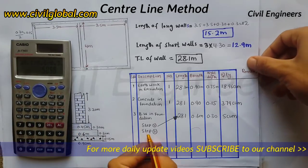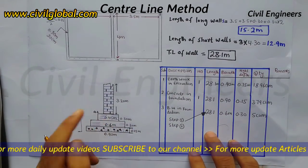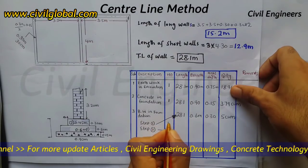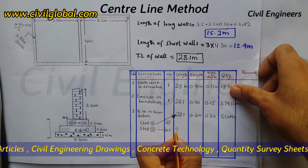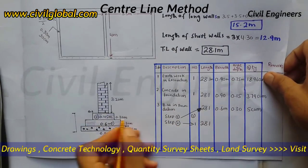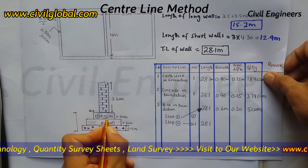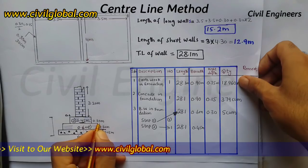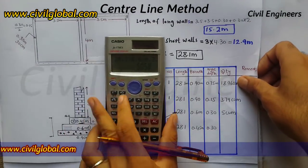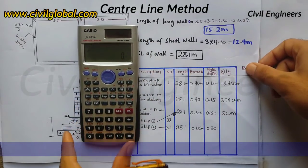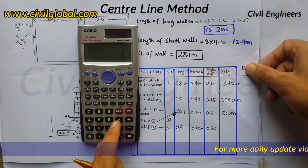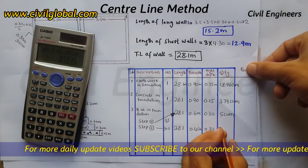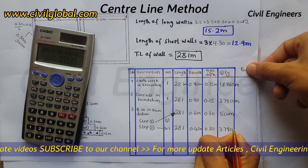For brickwork in foundation, second step: 1 number, length is 28.1 meters, breadth changes to 0.45 meters, and depth is 0.30 meters. The quantity is 28.1 × 0.45 × 0.30 equals 3.79 cubic meters (CUM).